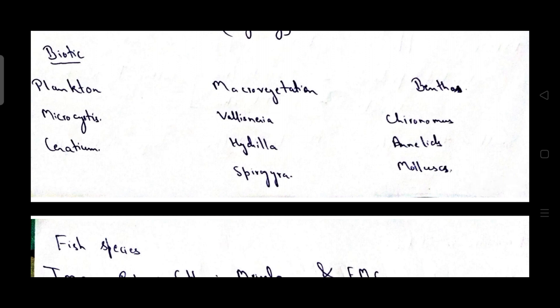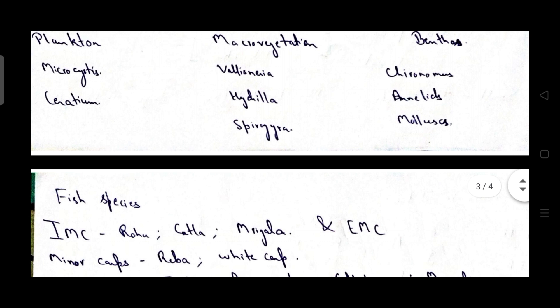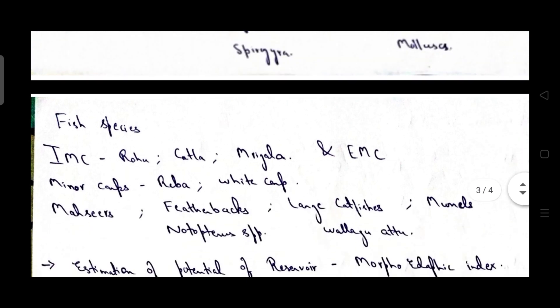Then productivity depends on biotic potential. They are plankton, microcystis and ceratium, macro vegetation, vallisneria, hydrilla, spirogyra, benthos organisms like chironomus larvae, annelids and mollusks as they will help in feeding of fishes. The fishes can feed on these organisms and can derive energy.